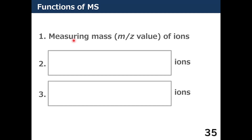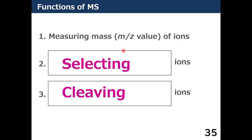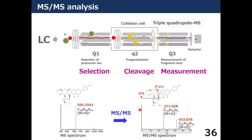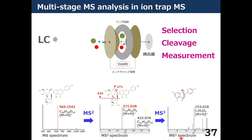MS measures the mass values of ions, and it also has two other functions: selecting and cleaving ions. This slide shows the triple quadrupole type MS. An ion — for example, a molecule with a mass value of 565 — is selected at the first stage, cleaved in the second stage by collision with an inactive gas, and then in the third stage, the mass values of the cleaved fragments are measured. This fragmented information is called the MS-MS spectrum.